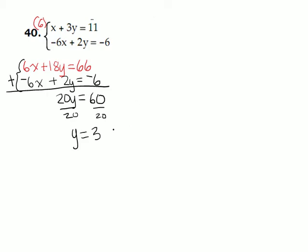Now, let's go back up to the original equations, and let's go with the first equation here, replace y with 3, and see what we're going to get for x. So, we're going to solve the equation, x plus 3y, so it's going to be 3 times 3, is equal to 11.